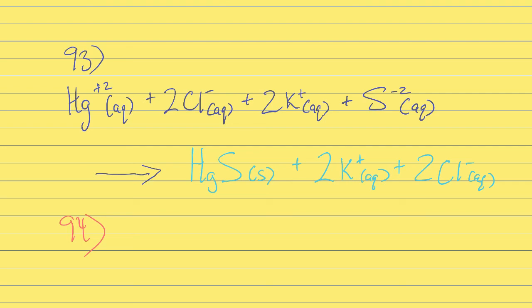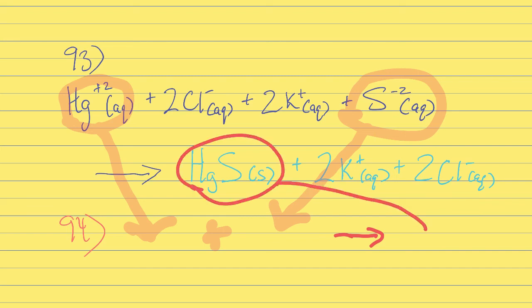We could just take those out. They're called spectator ions. They're watching the reaction but not getting involved. Question 94 is looking for the final reaction. You're going to take the mercury and write it first, plus the sulfur. We're going to leave out the spectator ions. That equals HgS, our final product. We're taking out the spectator ions, and whatever is left is your net ionic reaction.